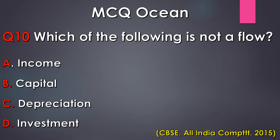The correct answer of this question is Option B, Capital. Capital is measured at a particular point of time, so it is a stock variable. Whereas income, depreciation, and investment are measured during or over a period of time, so these are flow variables.